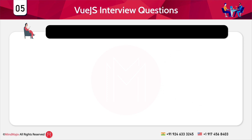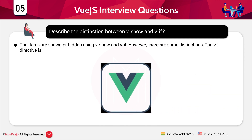The next question is: describe the distinction between v-show and v-if. Both are used to show or hide items, but there are differences. The v-if directive renders a block conditionally with lazy behavior — if the initial condition is false, the block will not be rendered until it changes. During a condition change, v-if destroys and recreates elements. When your condition does not frequently change at runtime, use v-if, as it has a lower initial render cost but a higher toggling cost.